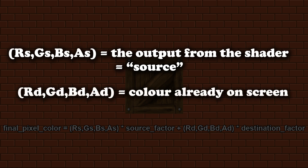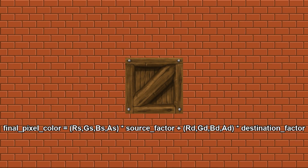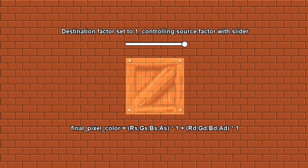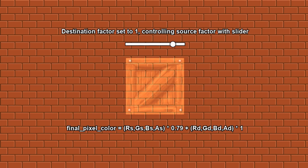The other color in the equation is the color of the pixel that's already on the screen — the color that will be replaced by the final pixel color. This is called the destination and is represented by the brick wall. They are each multiplied with a factor, and this factor is what we have control over. Additive blending is when the destination factor is set to 1 and the source factor is set to the alpha of the source.